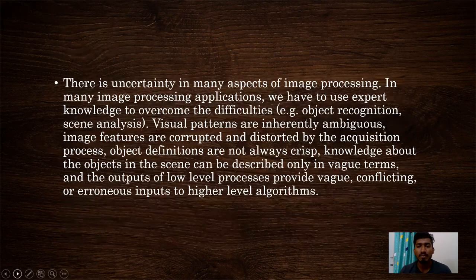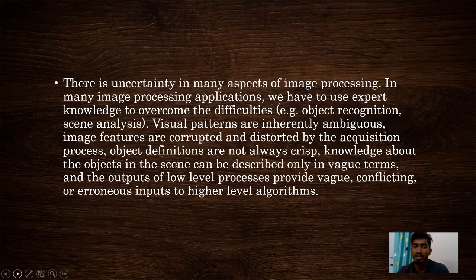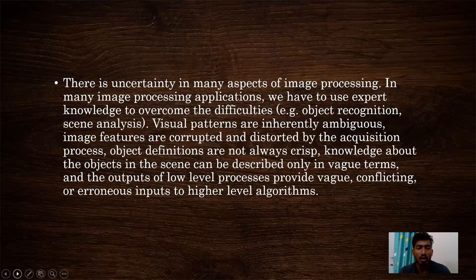There is uncertainty in many aspects of image processing. In many image processing applications, we have to use expert knowledge to overcome difficulties like object recognition and skin analysis. Visual patterns are inherently ambiguous. Image features are corrupted and distorted by the acquisition process. Object definitions are not always precise. Knowledge about the objects in the scene can often be described only in vague terms.